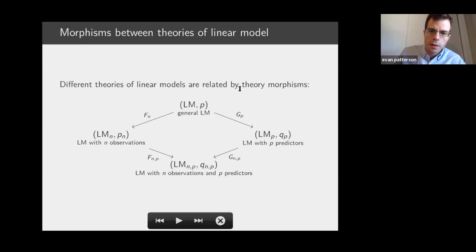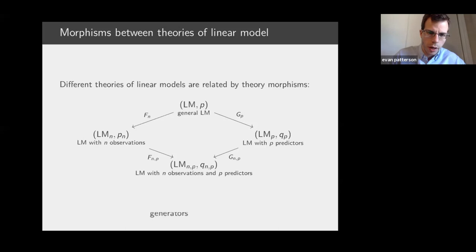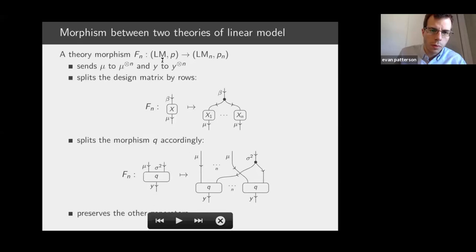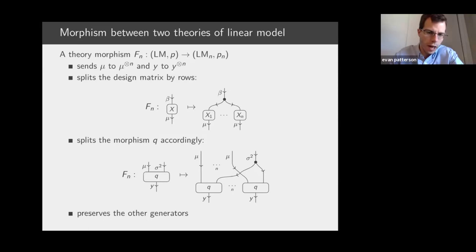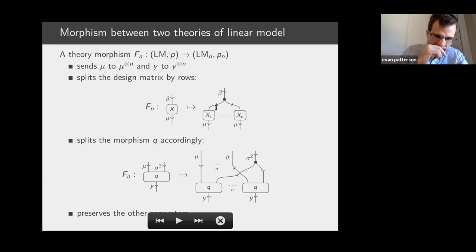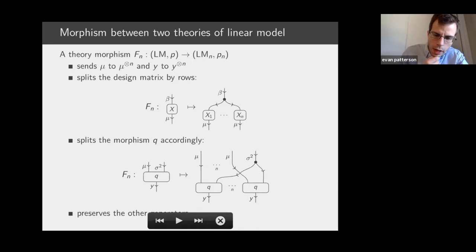Going back to our family of theories of the linear model, these are related by theory morphisms. For the two versions of the theory we looked at, we can send mu in the first one to the n-fold product of mu in the second one, and likewise for y. This corresponds to splitting the design matrix by rows, so the design matrix in the first theory becomes a composite matrix in the second. The random component is split similarly, and other generators are left as is, defining a theory morphism.